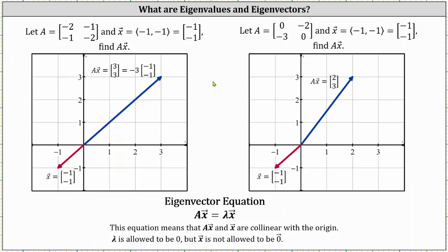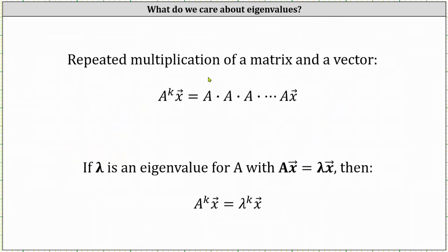Before we go, let's take a look at one reason why we care about eigenvalues. Repeated multiplication of a matrix and a vector often occurs in applications. For example, matrix A raised to the power of K times vector X is equal to K factors of matrix A times vector X, which would be very difficult or tedious to do by hand. However, if lambda is an eigenvalue for matrix A with matrix A times vector X equals lambda times vector X, then matrix A raised to the power of K times vector X is equal to lambda raised to the power of K times vector X, which would be much easier to calculate.